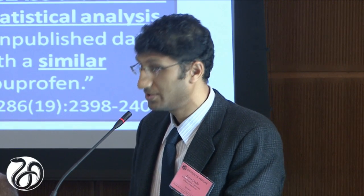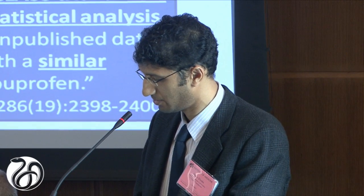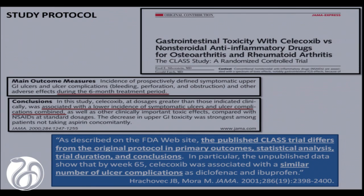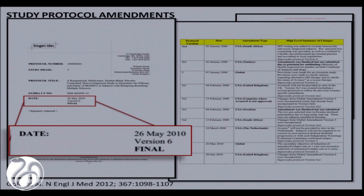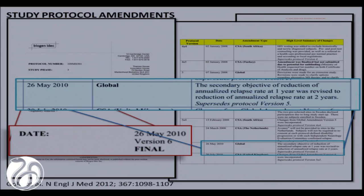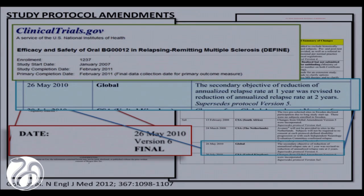Access to study protocols helps reduce the possibility of reporting biases. It was an original study protocol that allowed investigators of the CLASS study published in JAMA to know that the trial had been misreported — misreporting the original protocol, statistical analysis plan, the trial duration, and conclusions, including the key claim that Celebrex was safer than alternative treatments. Protocol amendments are just as important as the original protocol. In the protocol I just showed from the New England Journal website, the authors had only posted version 6. Included in version 6 is a compressed list of amendments made to prior versions. These amendments show that one of the pre-specified efficacy outcomes was altered three years into the duration of the trial — this is not mentioned in the journal publication.